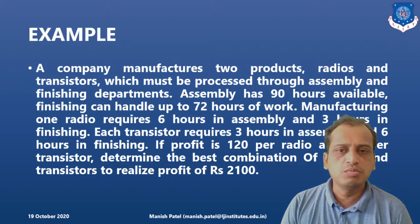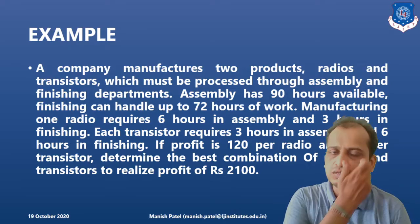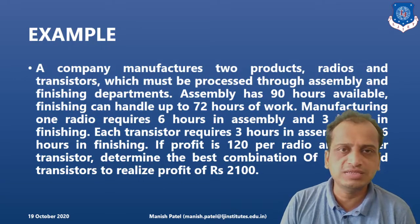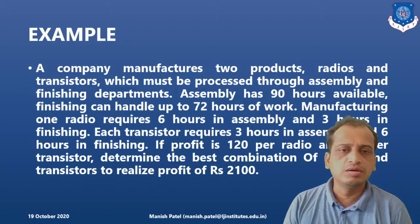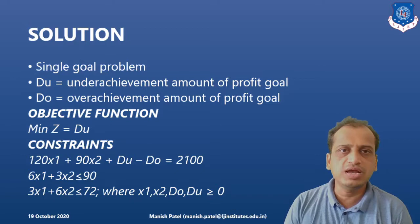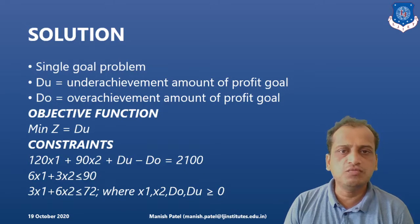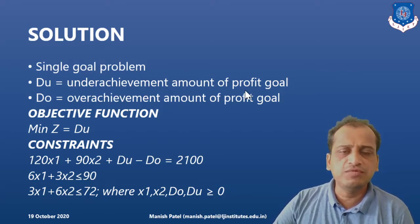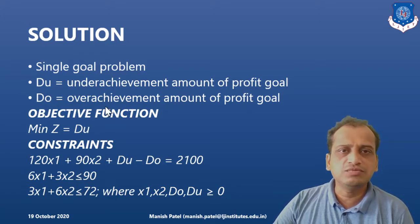The profit is ₹120 per radio and ₹90 per transistor. Determine the best combination of radios and transistors to realize a profit of ₹2100 — this is the company's specific single goal. We introduce two variables for underachievement (du) and overachievement (do) for the profit goal. The objective function is to minimize the underachievement of the target.